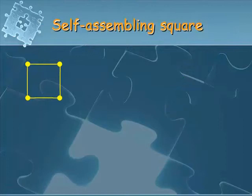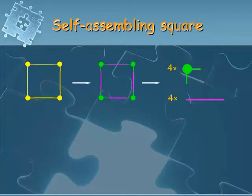So, a self-assembled square. What would those corners, what would those sides actually be? Well, let's break it down. Yes, you're quite right. We need four corners and four sides.